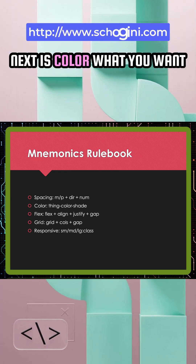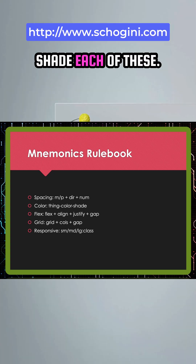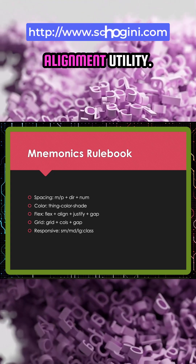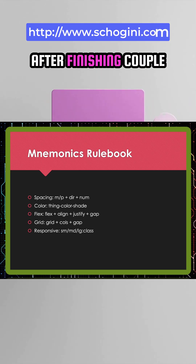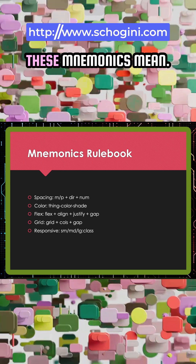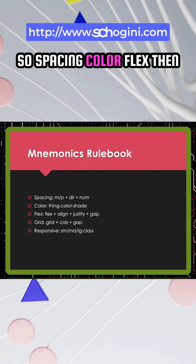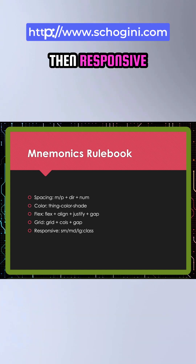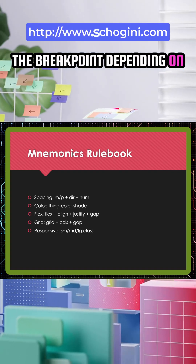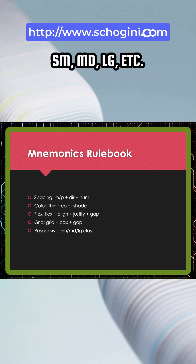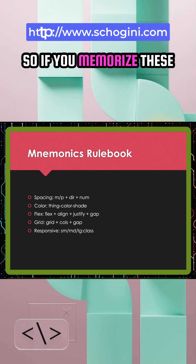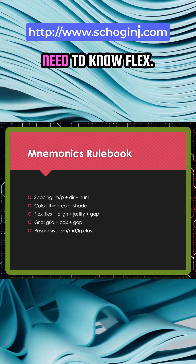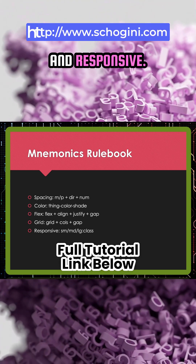Next is color: what you want to style, plus color, plus shade. We will see examples in the coming slides. Next is flex: flex plus alignment utility. Then grid: grid plus column count. Then responsive: the breakpoint depending on different screen sizes — SM, MD, LG, etc. If you memorize these patterns, you will never need documentation again. You need to know spacing, color, flex, grid, and responsive.